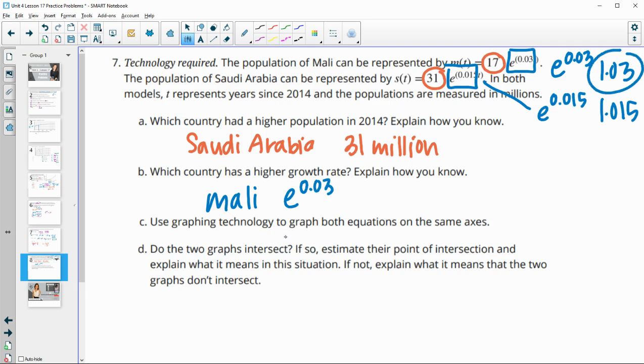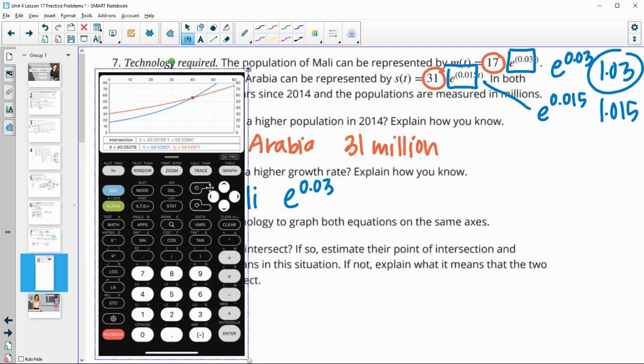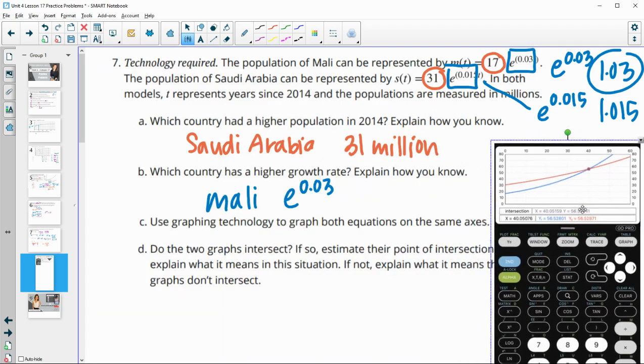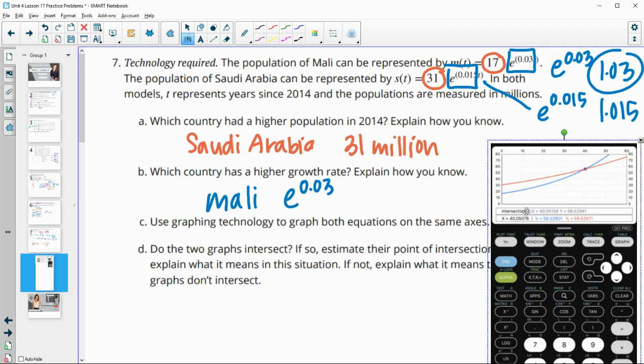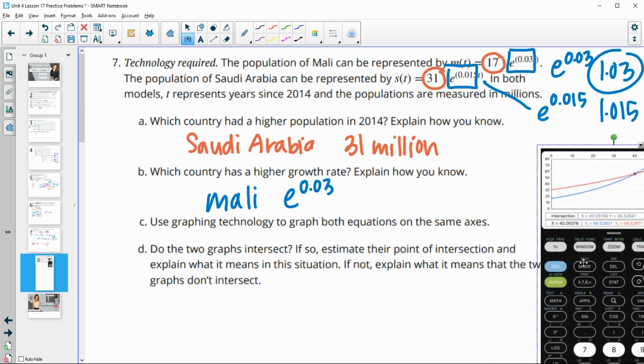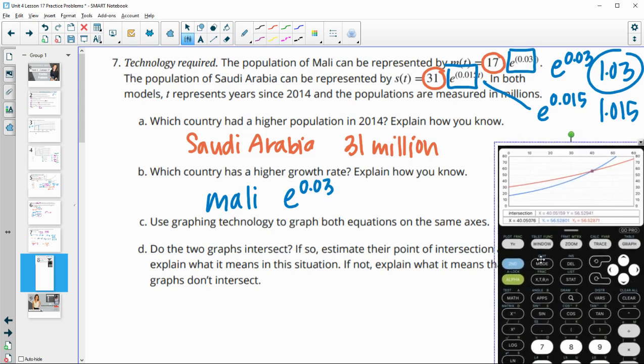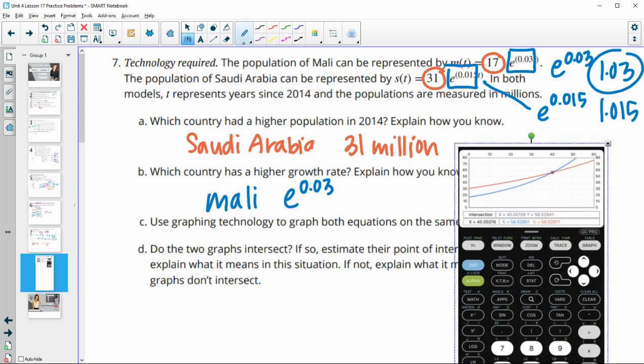Then it says use graphing technology to graph both equations on the same axis. So I've done that in a graphing calculator here. So to do that, you just hit y equals, type in both equations, and then hit graph. So we can see these two functions here. So S of t is the red one and M of t is the blue one. And it says do the graphs intersect? And if so, estimate their point of intersection and explain what this situation means. So yes, they intersect, right? So they're intersecting right here.